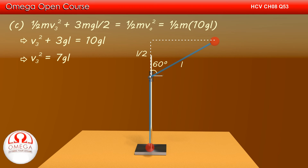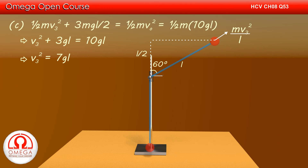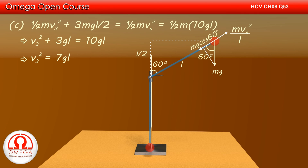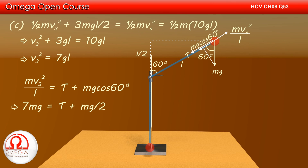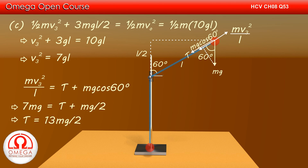Drawing the free body diagram: centripetal force mV3²/L acts radially outward, gravitational force mg acts vertically downward, and tension T acts along the string toward the center. Since gravity makes an angle of 60 degrees with the string, its component toward the center is mg cos 60°. Balancing forces along the string: mV3²/L = T + mg cos 60°. Substituting V3² = 7gL and cos 60° = 1/2: 7mg = T + mg/2, giving T = 13mg/2.